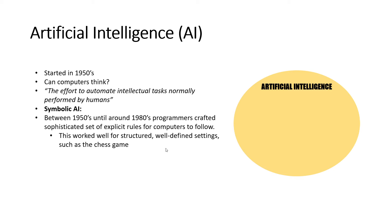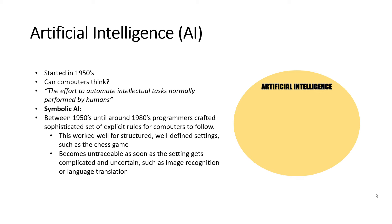However, as you can imagine, this very quickly becomes untraceable as soon as the setting gets complicated and uncertain. When you don't know what is going to happen as a result of one action, you introduce uncertainty and probability into your setting, and then you can no longer follow a structured set of predefined if-then rules to achieve your tasks. Settings such as image recognition or language translation are examples of where symbolic AI fails miserably.